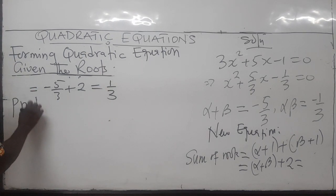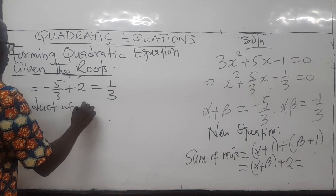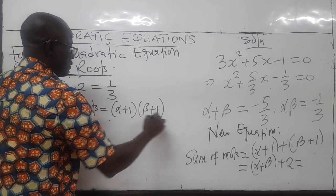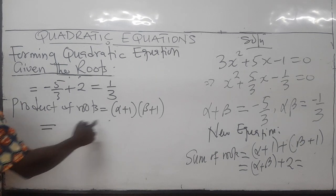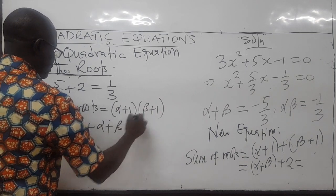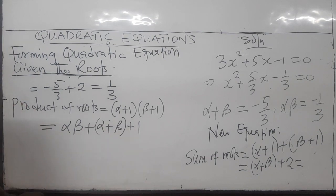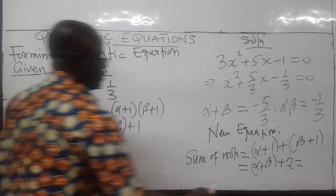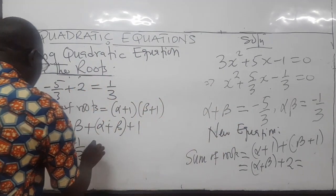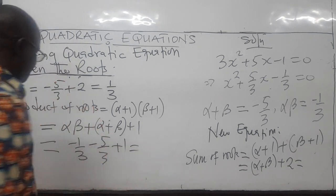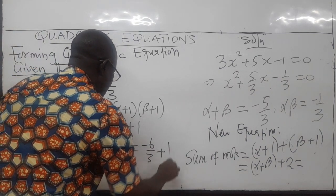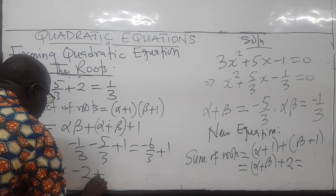The product of the roots for our new equation will be alpha plus 1 multiplied by beta plus 1, which gives alpha beta plus alpha plus beta plus 1. Alpha beta is negative one-third, alpha plus beta is negative five-thirds, plus 1. That gives negative six-thirds plus 1, which is negative 2 plus 1, which equals negative 1.